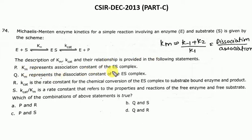KM is the dissociation constant of the ES complex — Q is the correct option. Kcat is the rate constant for chemical conversion of the ES complex. However, Kcat is not simply a rate constant for chemical conversion; Kcat is the turnover number. Kcat can be calculated with the help of VMAX. So option R is wrong.